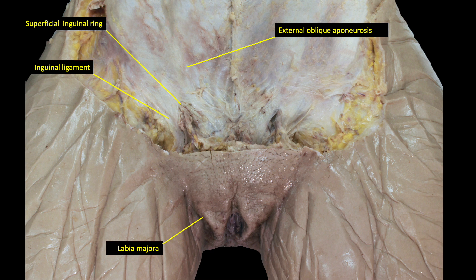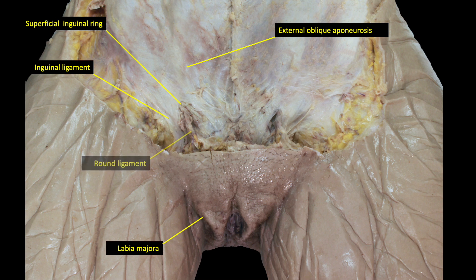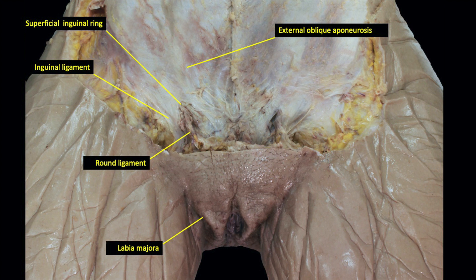The female exhibits an identical inguinal canal indistinct from that of the male. The only difference is that instead of a spermatic cord, the canal contains the round ligament of the uterus, stretching from the uterus to the labia majora, providing lateral support for the uterus. Females can also develop direct and indirect inguinal hernias; however, because the round ligament is smaller than the spermatic cord, the female inguinal canal is smaller, making indirect inguinal hernias less likely. Following a hysterectomy, the round ligament tends to wither away, making it difficult to find in dissection.